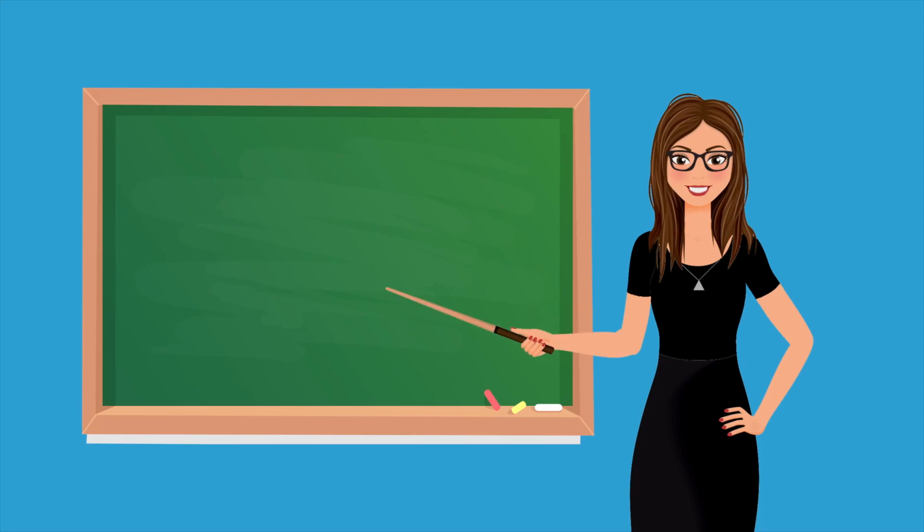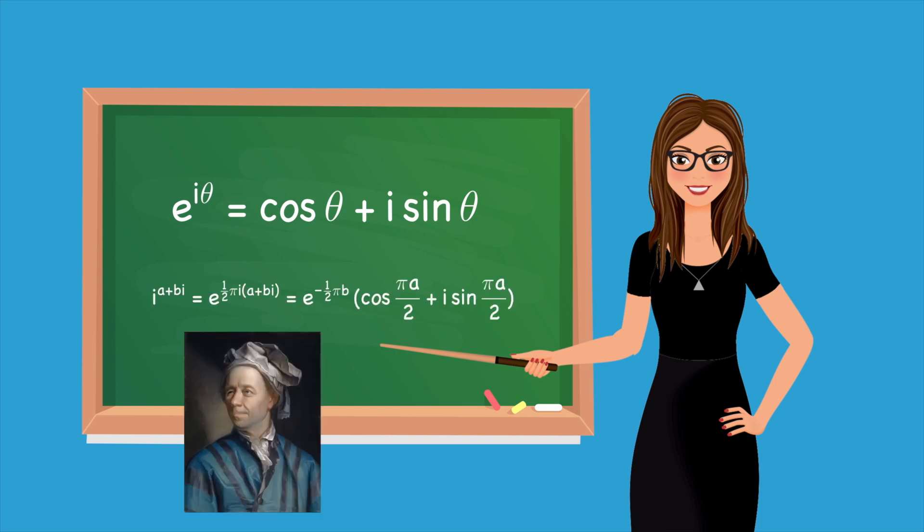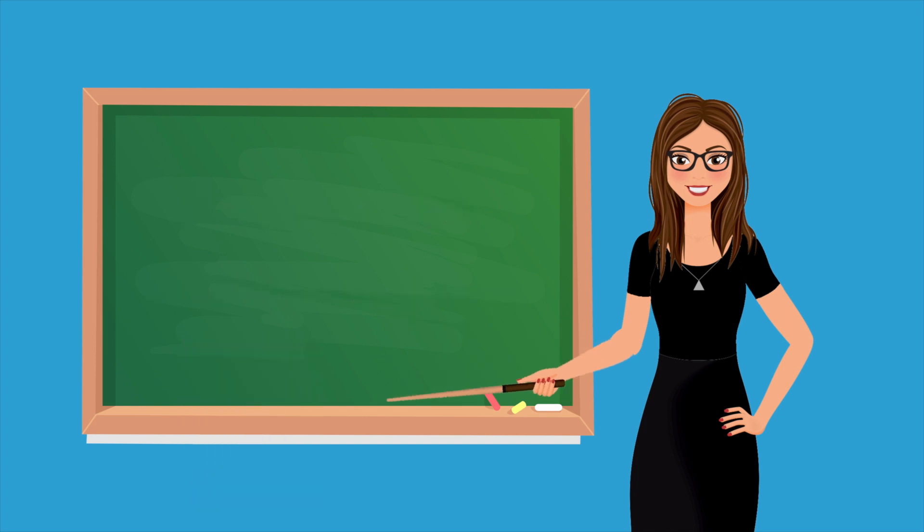We can also perform Tetration with complex number bases. Take the imaginary constant i. As shown in a previous video on exponentials, we can define powers of i using Euler's formula. It's funny how he keeps coming back into our discussions. Based on this formula, we can derive the following formula for i raised to any complex number.